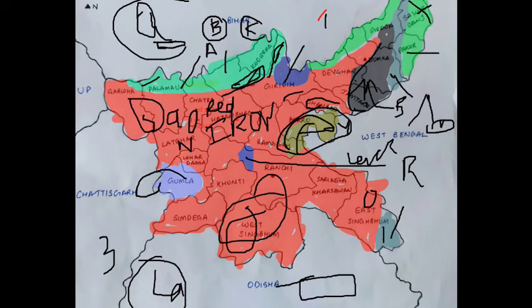Khadar has less kankar (nodules) and is found in the eastern part of Pakur and the north-eastern sides.